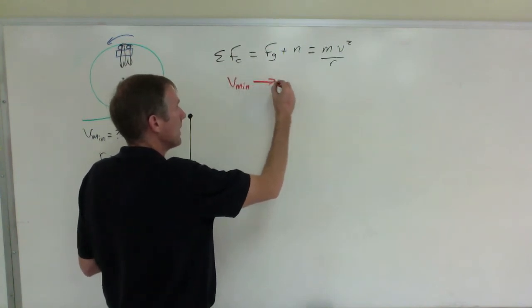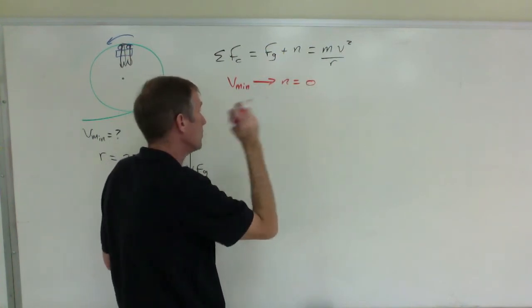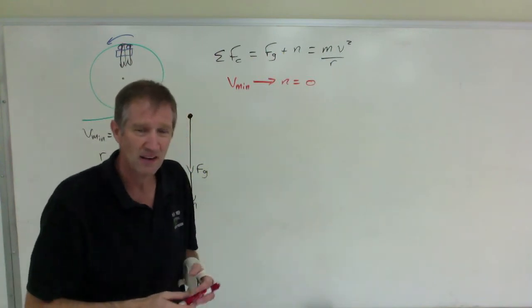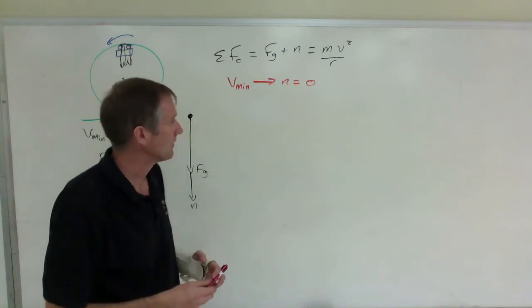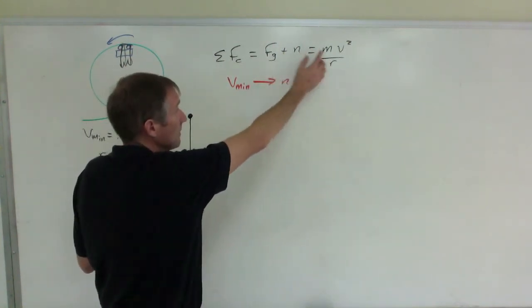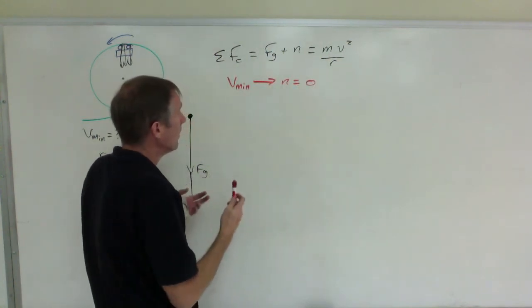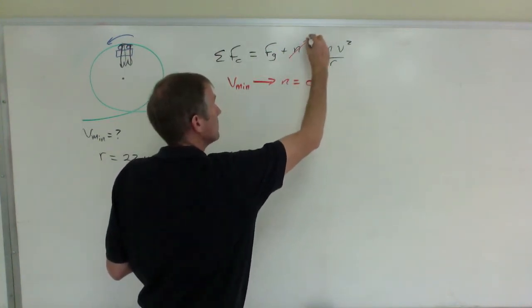So v minimum makes normal force zero. What speed corresponds to just making the normal force zero? If you go any slower than that, you're going to, at the top, go into freefall. And that's not what you want to happen. You can go faster than that. But you can't go any slower than this, because otherwise you're going to freefall. So, in order to do this, it's actually an easy calculation. Set normal force equal to zero.